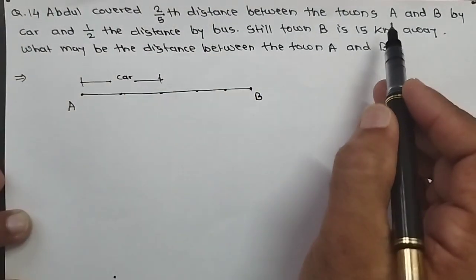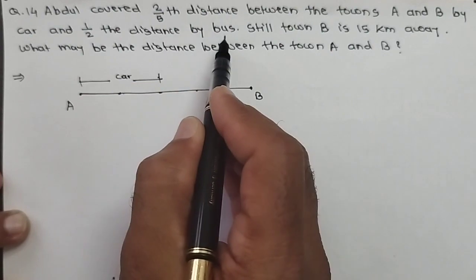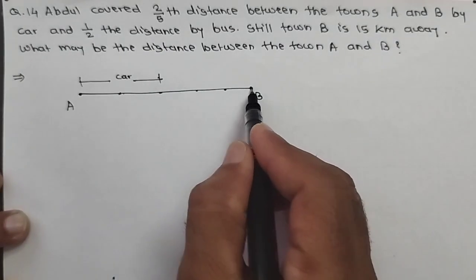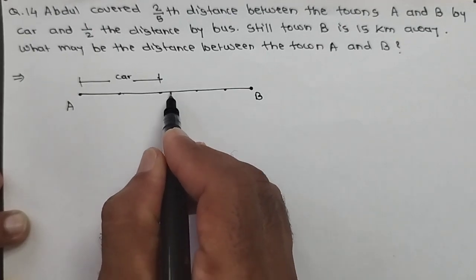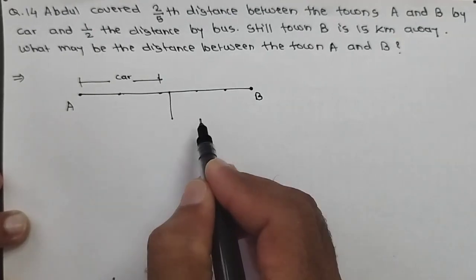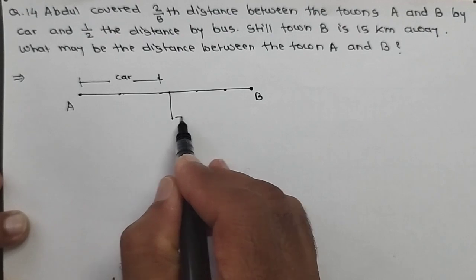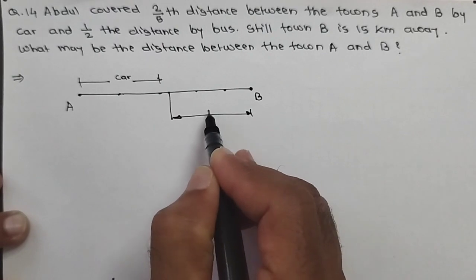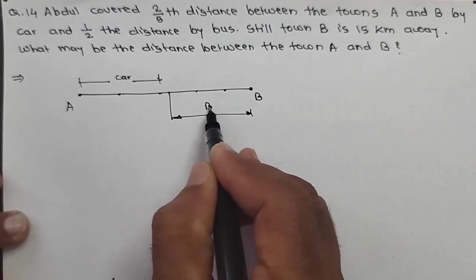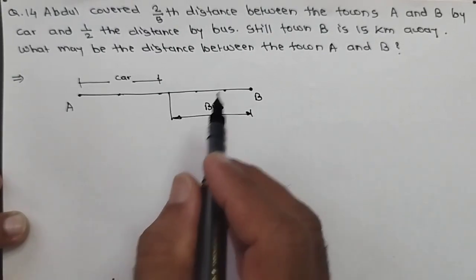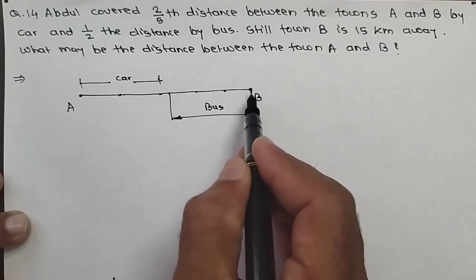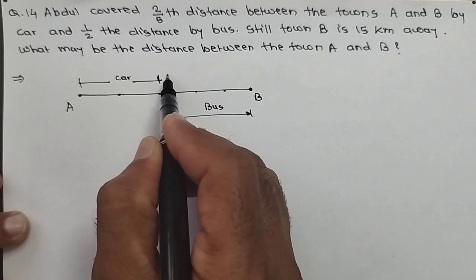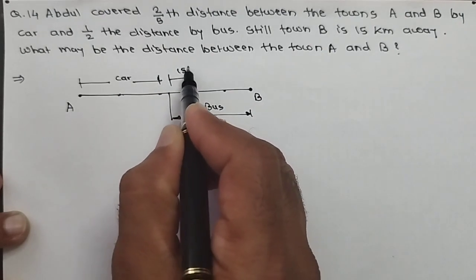One more statement is given: half of the distance is covered by bus. Means, out of the total distance, half of it is covered by bus. Still, 15 kilometers is away — meaning the gap between the point reached by bus and town B must be 15 kilometers.